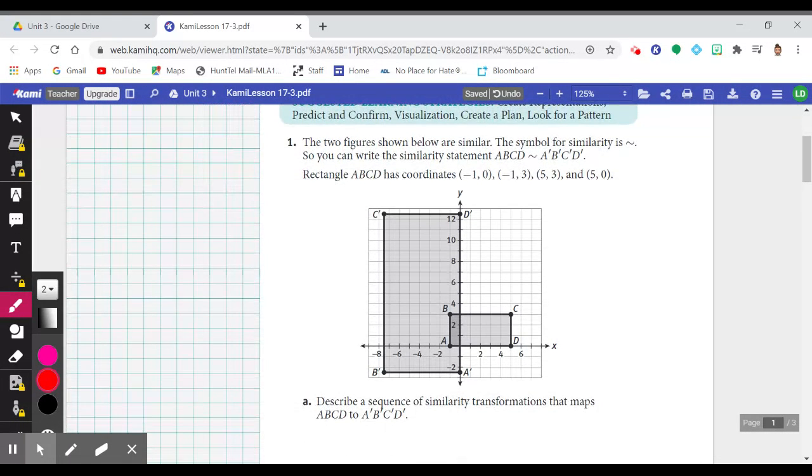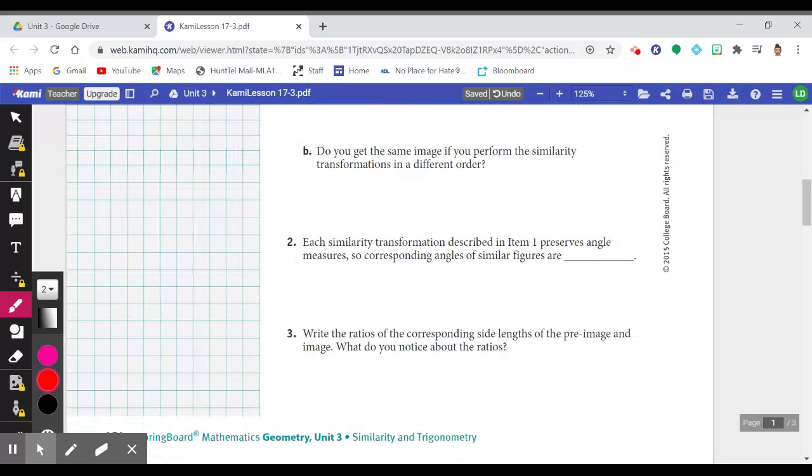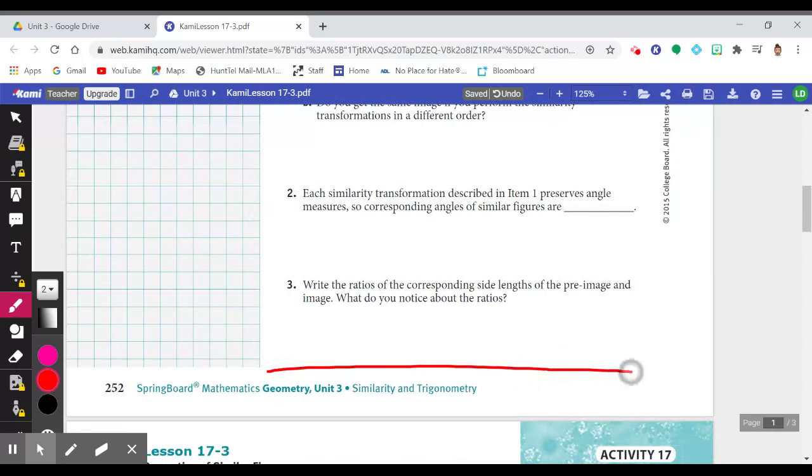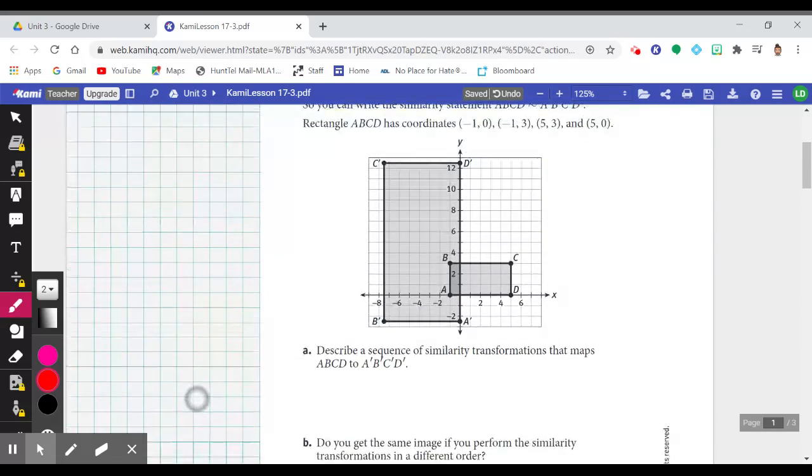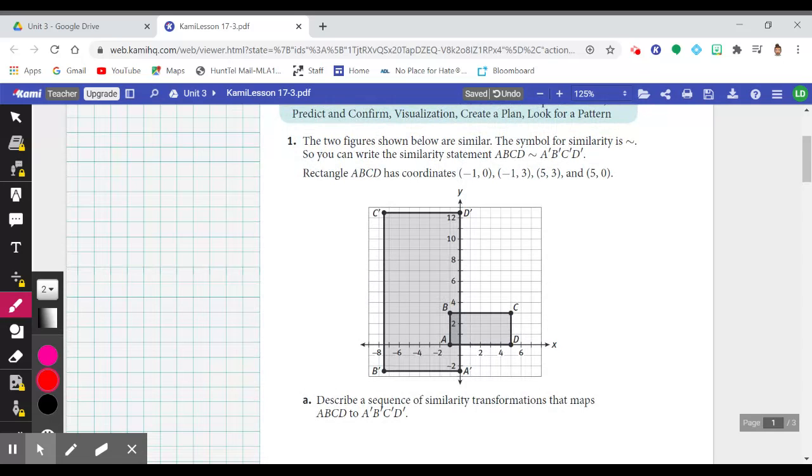If you would, take a second and draw a line at the bottom of your page, number three. So we're going to chunk numbers one through three together. So attempt to do one through three on your own. Number one is definitely a continuation of Lesson 17-2, so if it gives you a little trouble, go back to 17-2.